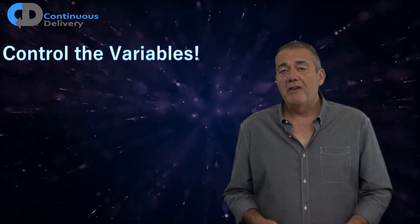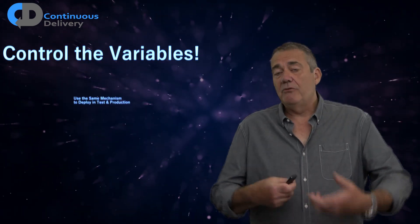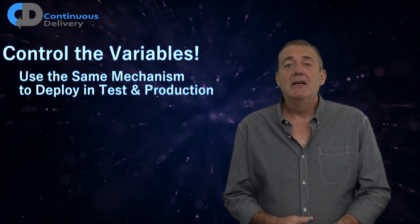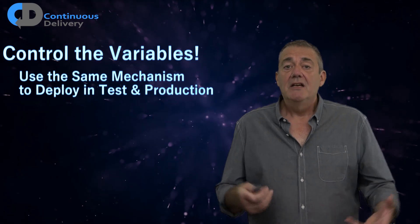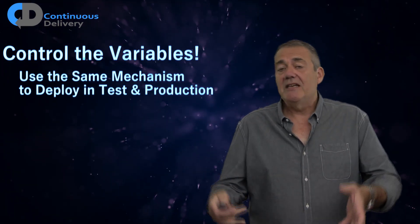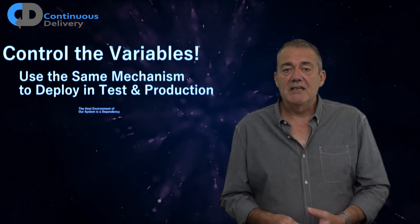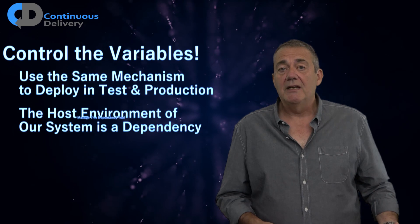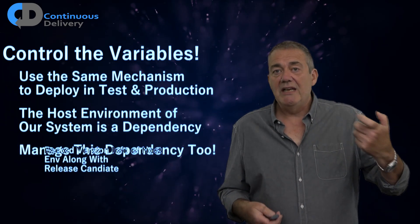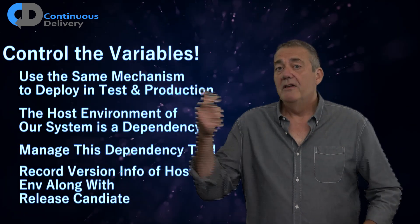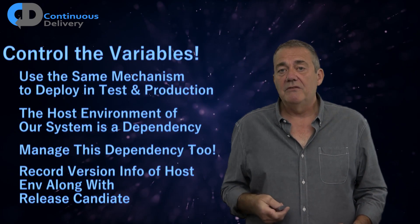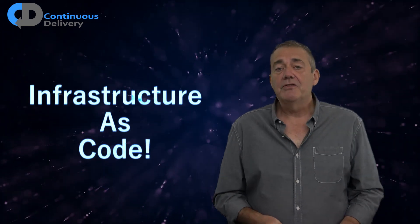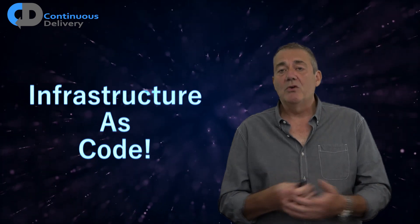We must control the variables. If we want to be able to reliably and repeatedly deploy our software wherever we want it, we need to be able to understand the state that the environments that we're going to put these things into. The environment in which our software operates is a dependency of the software. I'd like to know that this particular release candidate will work definitively with this version of the environment configuration. We start off with deployment automation and fairly quickly we end up at infrastructure as code and being able to automate all of these things.